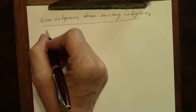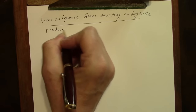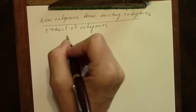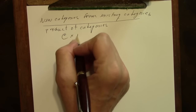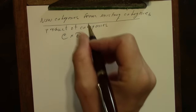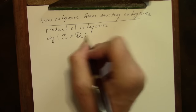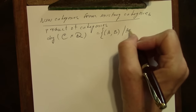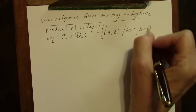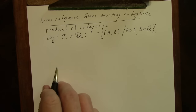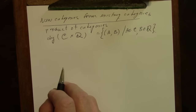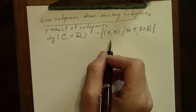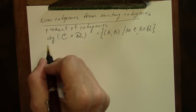One rather direct way is the product of categories. If we have categories C and D, we can take their product. The objects are just the ordered pairs (A, B) where A is an object in C and B is an object in D. Morphisms are ordered pairs of morphisms, one from C and one from D — I'm going to let you fill in the details on this one, as it's pretty straightforward.